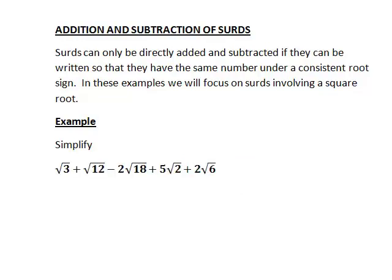So keeping that in mind, let's look at a second example. Simplify √3 + √12 - 2√18 + 5√2 + 2√6.